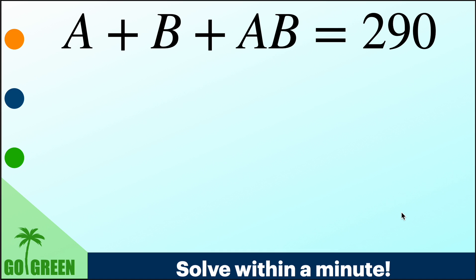So if you just think of it for a moment, you will get some trivial solutions. Like you can take A to be 290 and B to be 0. So then A plus B is simply 290.